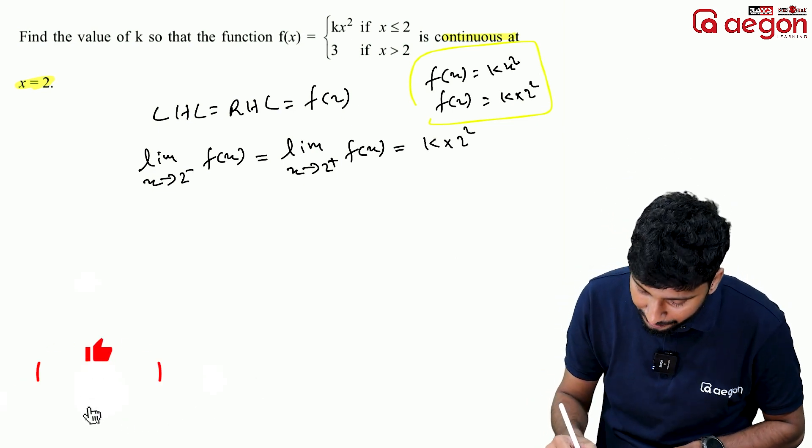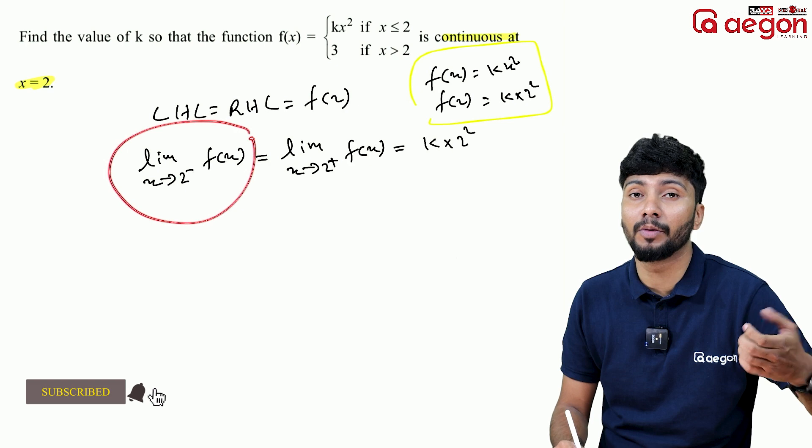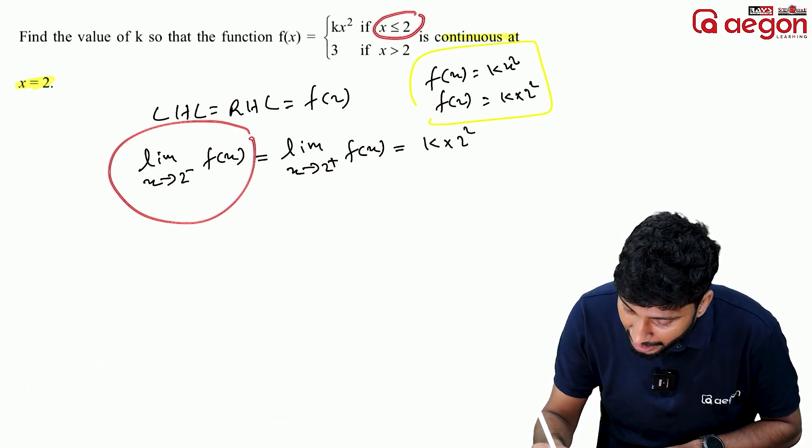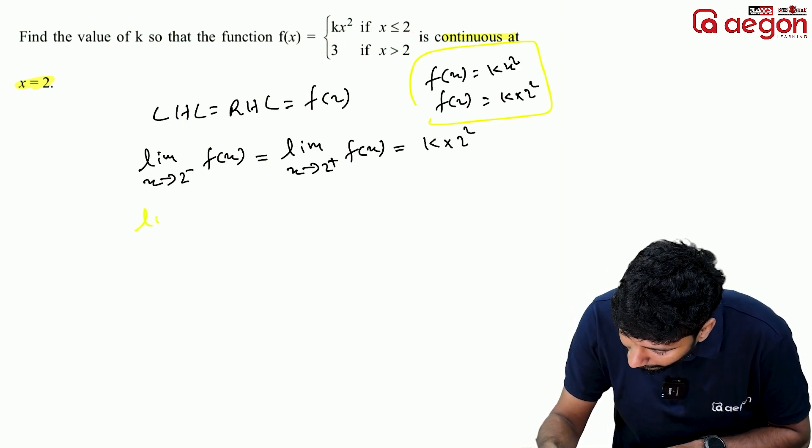Now for the left hand limit, limit x tends to 2 minus f of x, when x is less than 2, the function is kx².